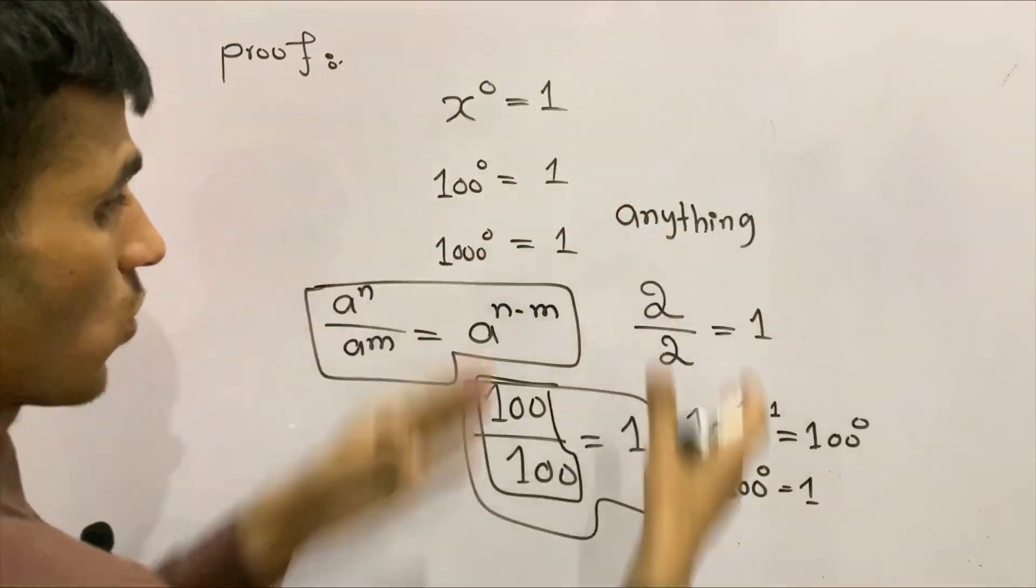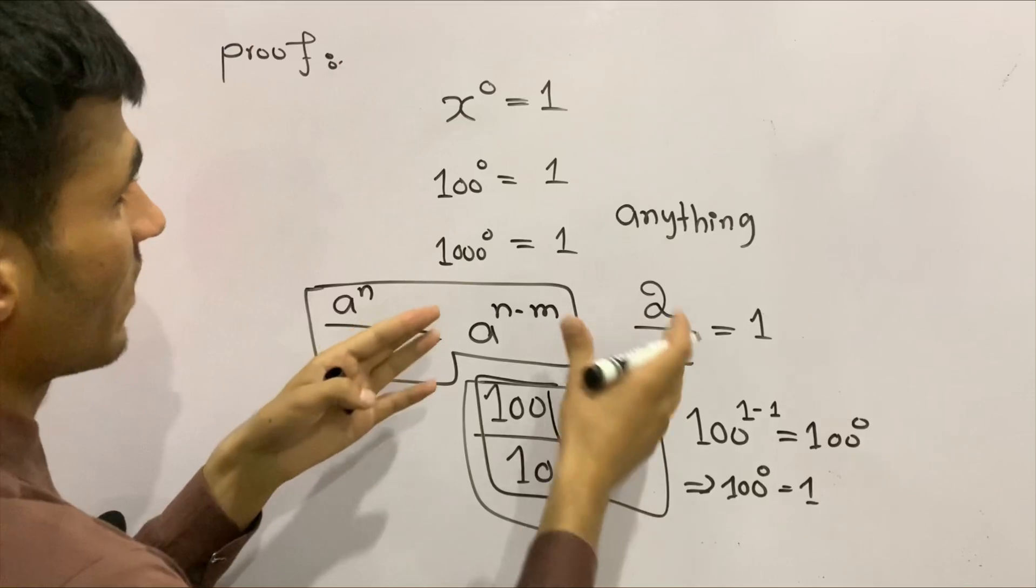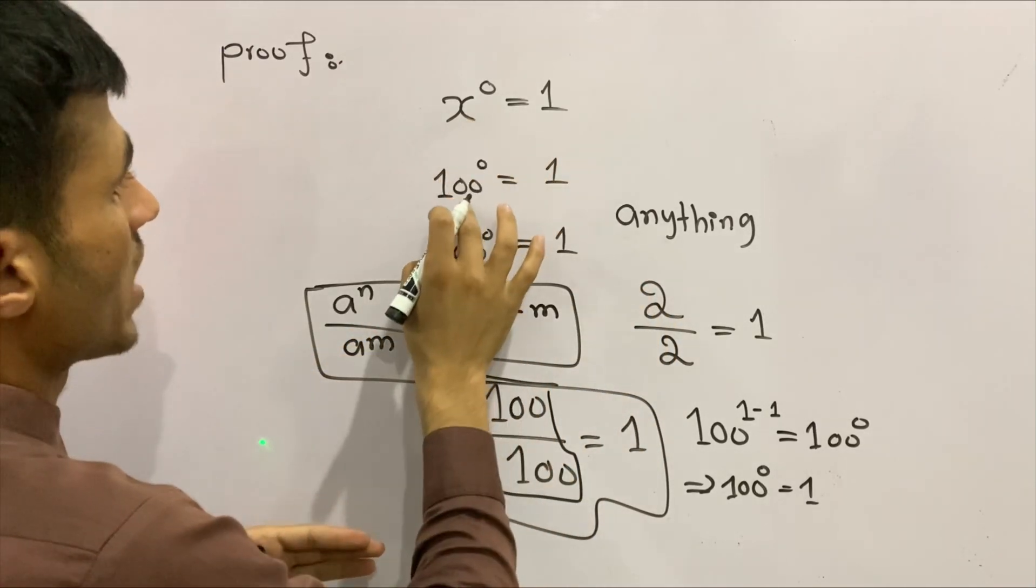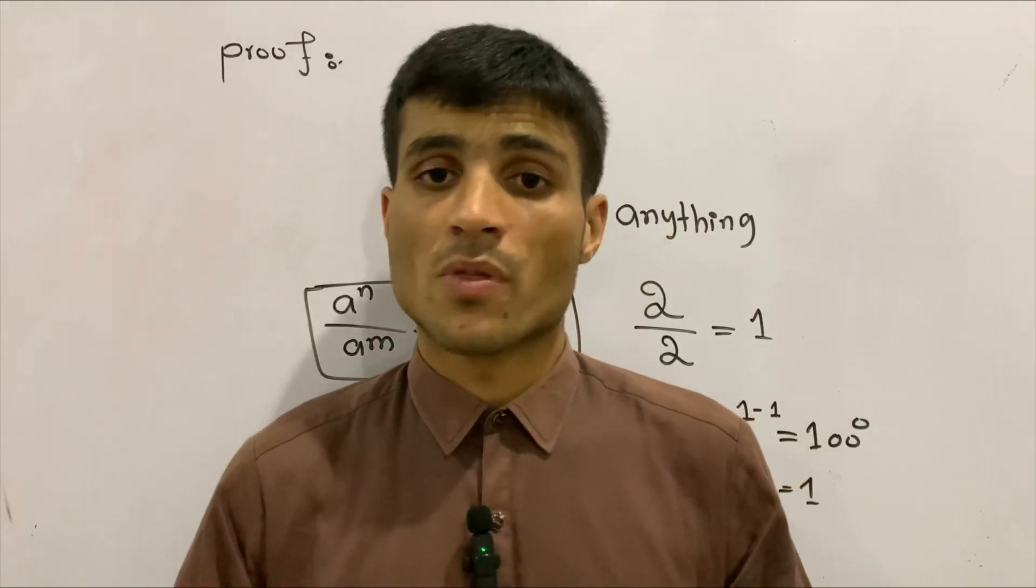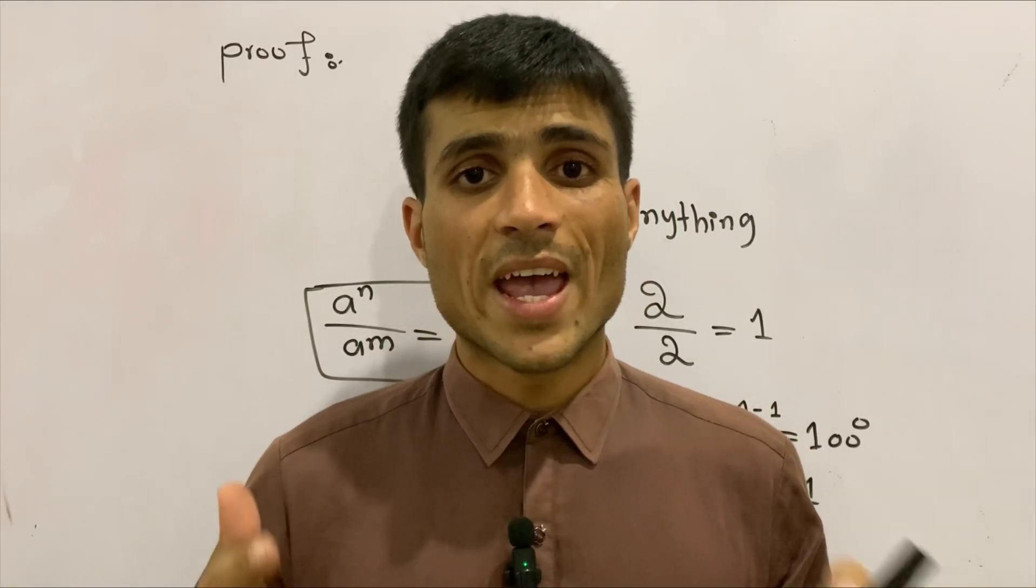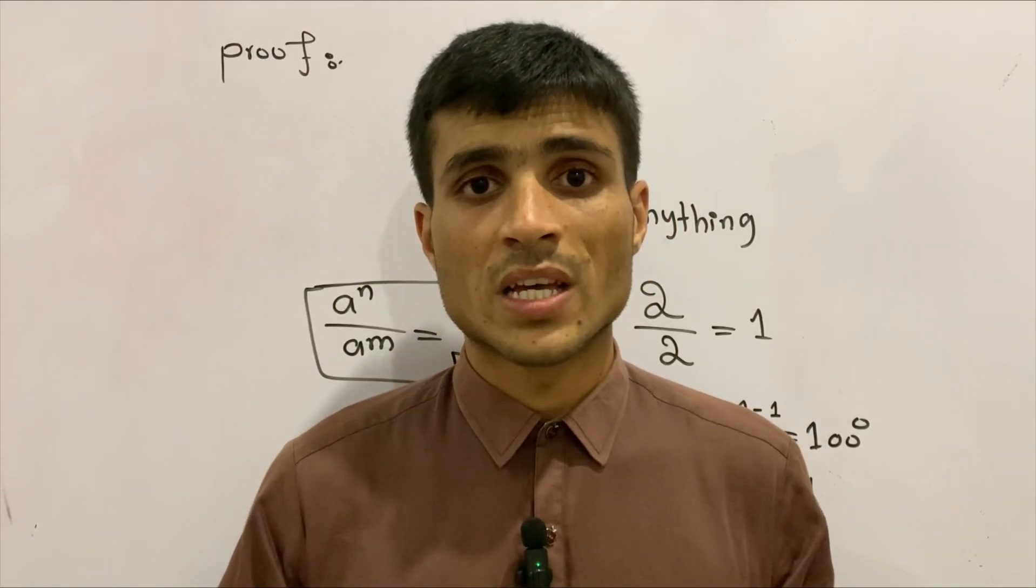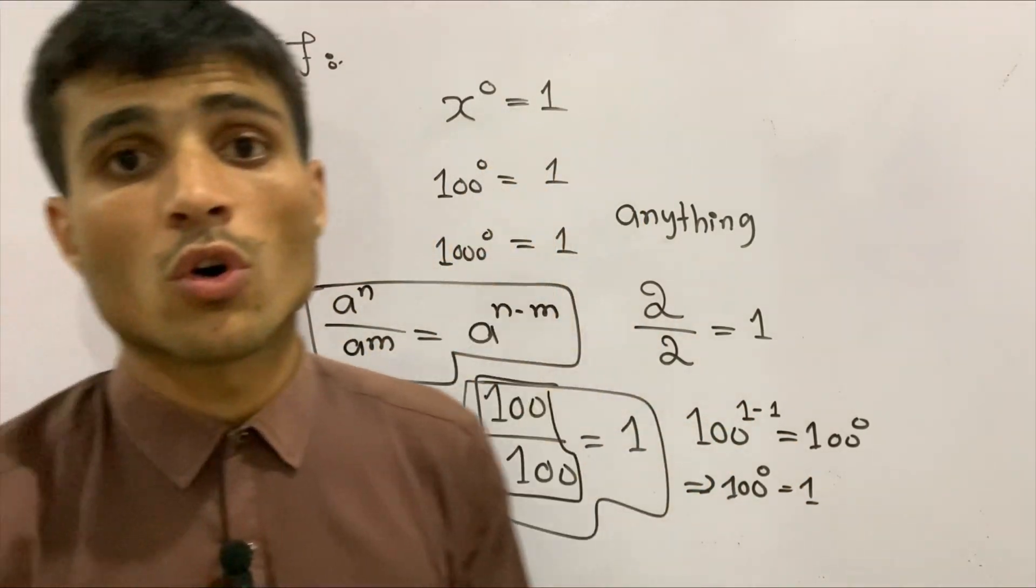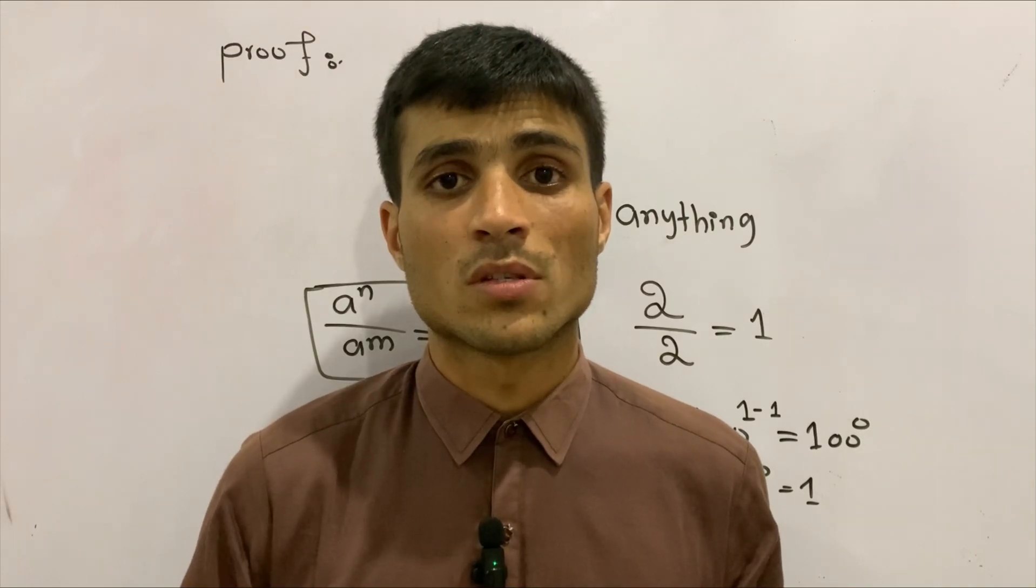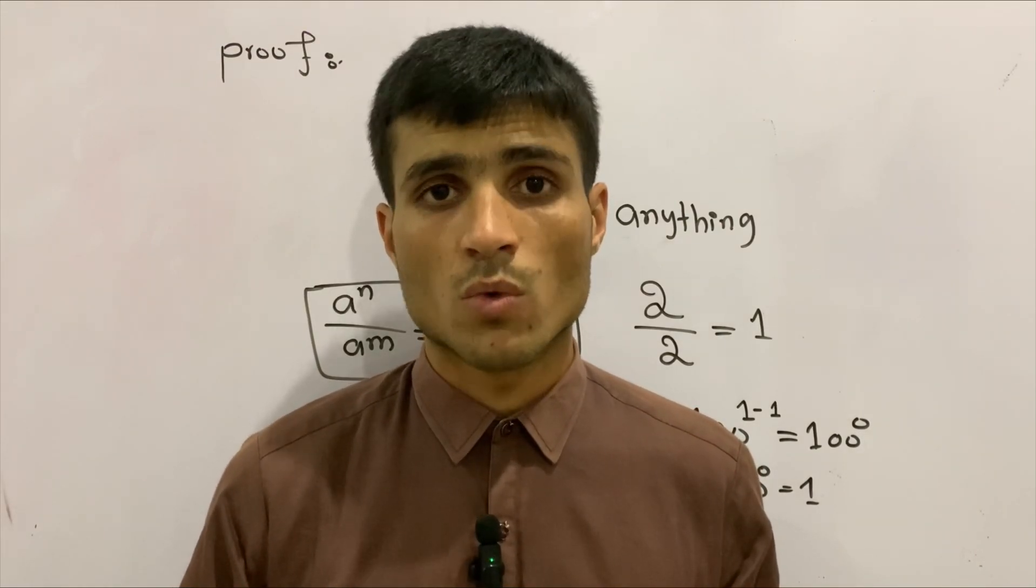This is true for all values: two to the power of zero, 100 to the power of zero, 1000 to the power of zero—anything to the power of zero is going to give us one. This was the easy proof of how and why anything to the power of zero equals one.